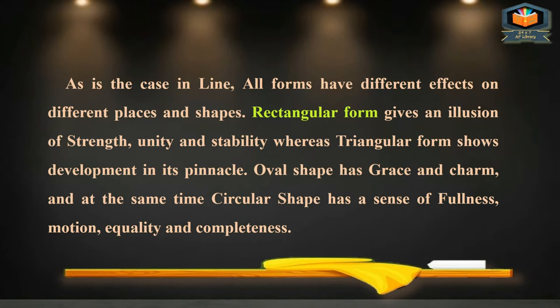As with line, all forms have different effects. Rectangular form gives an illusion of strength, unity, and stability. Triangular form shows development reaching its pinnacle. Oval shape has grace and charm. Circular shape has a sense of fullness, motion, equality, and completeness.